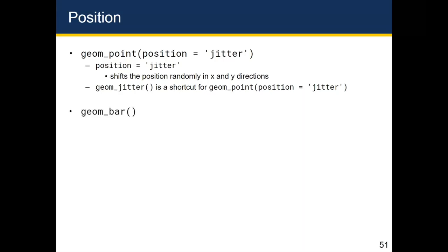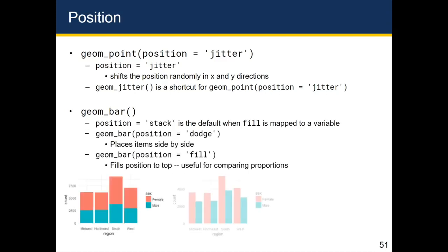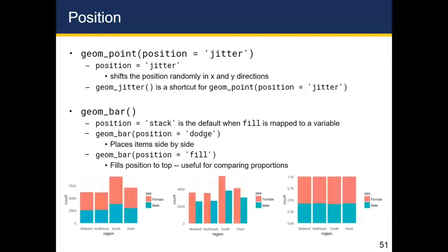In terms of the bar chart, you might remember that we kind of had a couple of different types of bar charts. The default bar chart has a position equals stack. So you don't have to specify it. That's just the default position any time you use geom bar when you've mapped fill to a variable. So if you map fill to the sex variable and you've got a stacked bar chart where region is on the x axis, you basically get the plot on the bottom left.